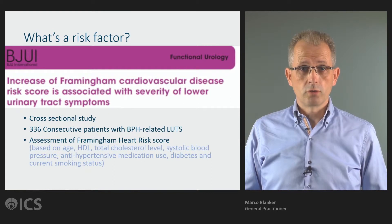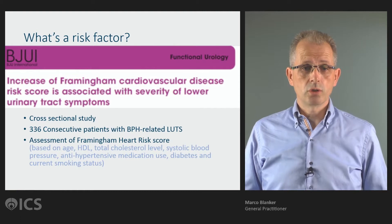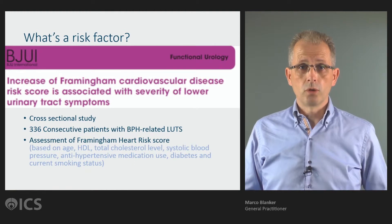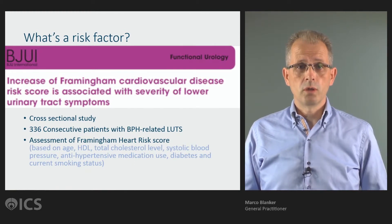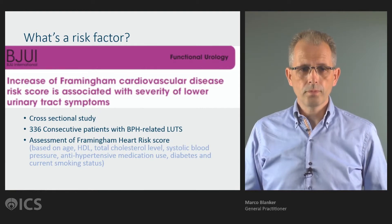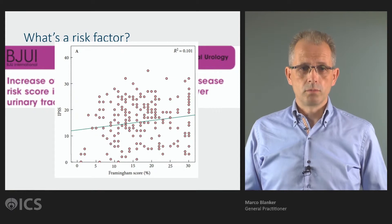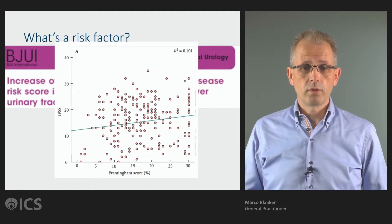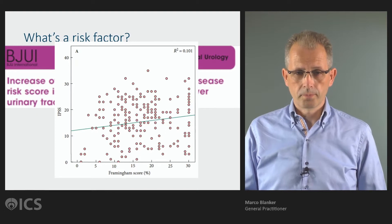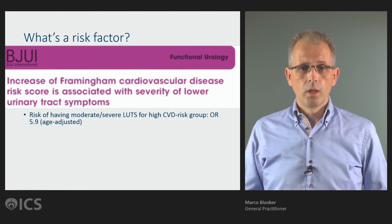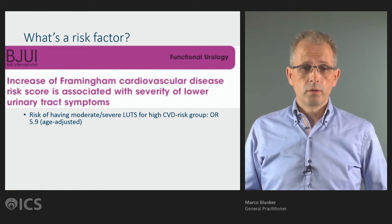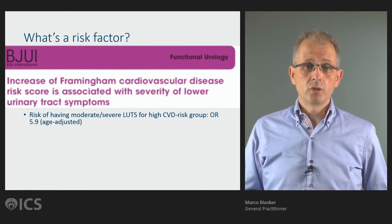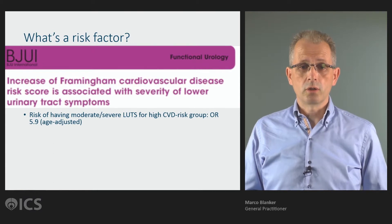More details about the study of De Rosso. This was a cross-sectional study, quite a large study, in over 300 men with BPH-related LUTS. In all these men, they assessed the Framingham heart risk score based on the listed items. This is the main outcome of that study. You see the IPSS scores ranging from 0 to 35, and the Framingham heart score ranging from 0% to 30%. Along with this figure, authors presented an age-adjusted odds ratio of 5.9 for the risk of having moderate to severe LUTs in the high cardiovascular disease group.